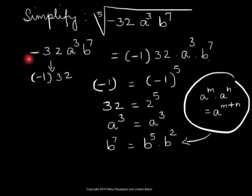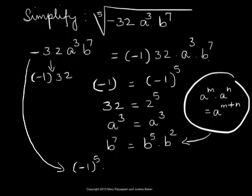So the radicand negative 32 a cubed b to the 7 can be written as negative 1 to the fifth power times 2 to the fifth power times a cubed times b to the fifth power times b squared.